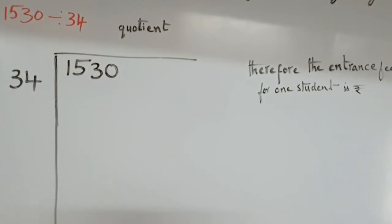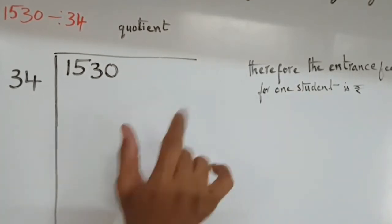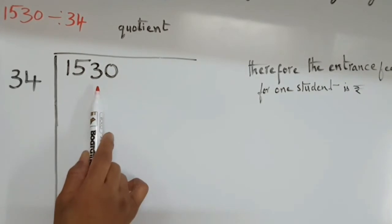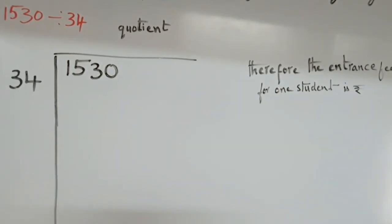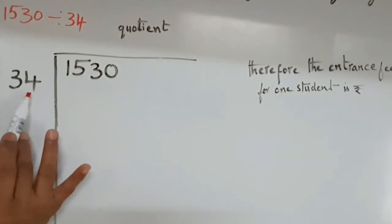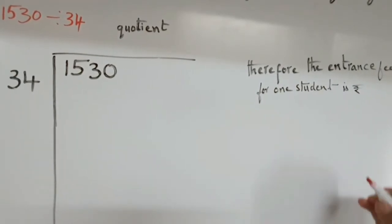What we have to do? We have to choose our third digit from the dividend. 3 is our third digit. Now, 153. Now, how many 34s in 153? For that, because it is double digit, what we have to do? Either we can add or multiply.